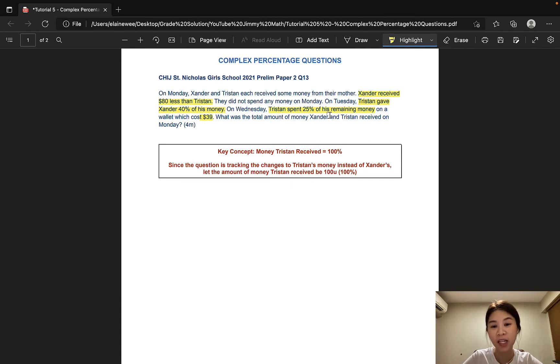So as you can see, we have an off the remainder question right here. And we are also comparing between two people, the money that Tristan received and the money that Xander received. So this is what makes a percentage question complex because the student will be confused as to whether they should make Tristan's money 100% or they should make Xander's money 100%.